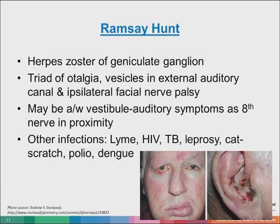Other infections reported to affect the seventh nerve include Lyme, HIV, TB, leprosy, cat scratch fever, polio, and dengue. Ramsay Hunt has a much less favorable recovery profile than Bell's palsy: only 21% return to normal function, 79% of patients develop sequelae, and more than half have very poor recovery.